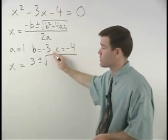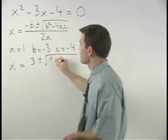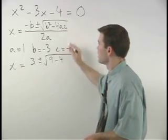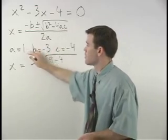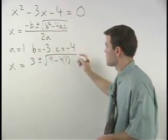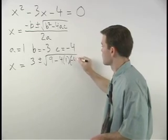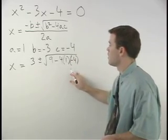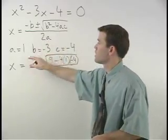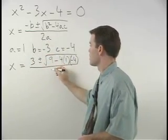minus 4 times a, which is 1, times c, which is negative 4, all over 2a, which is 2 times 1, or 2.